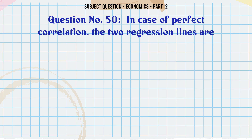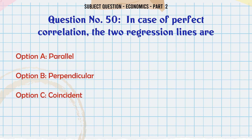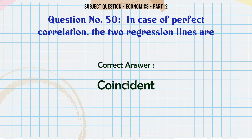In case of perfect correlation, the two regression lines are: A. Parallel. B. Perpendicular. C. Coincident. D. Inclined to each other. The correct answer is: Coincident.